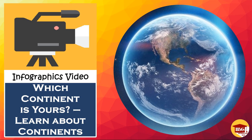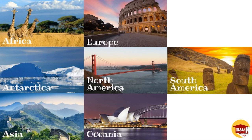The continent is used to distinguish between the various large terrestrial areas of the Earth, where all the Earth's surface is divided into seven main divisions of land. These seven continents are Africa, Antarctica, Asia, Europe, North America, Oceania, and South America. Every continent includes different countries, culture, society, and landscapes around the world.